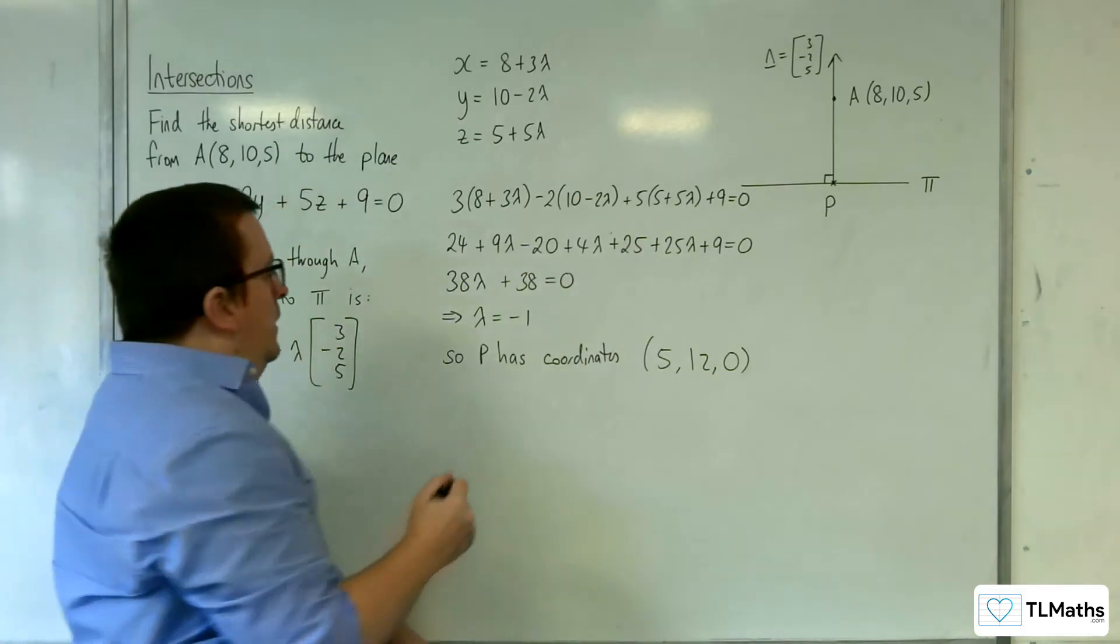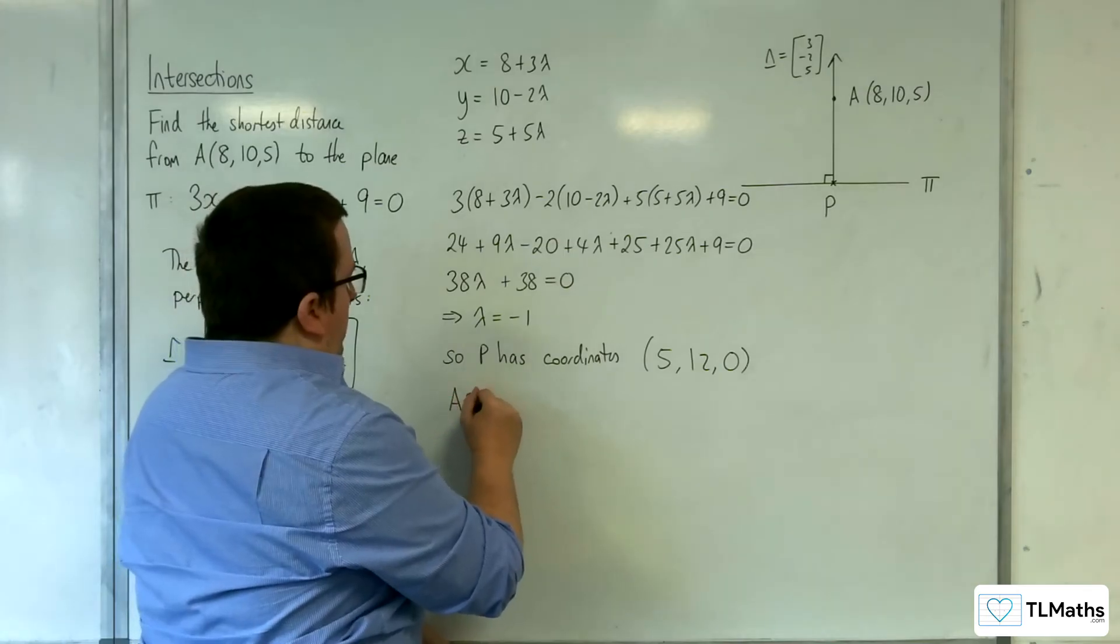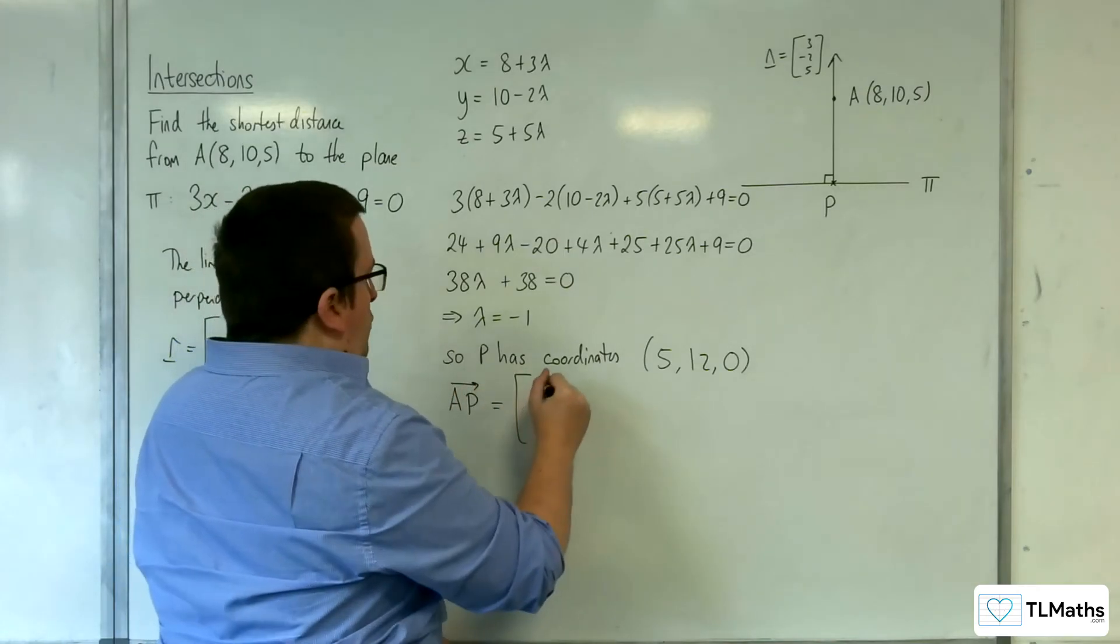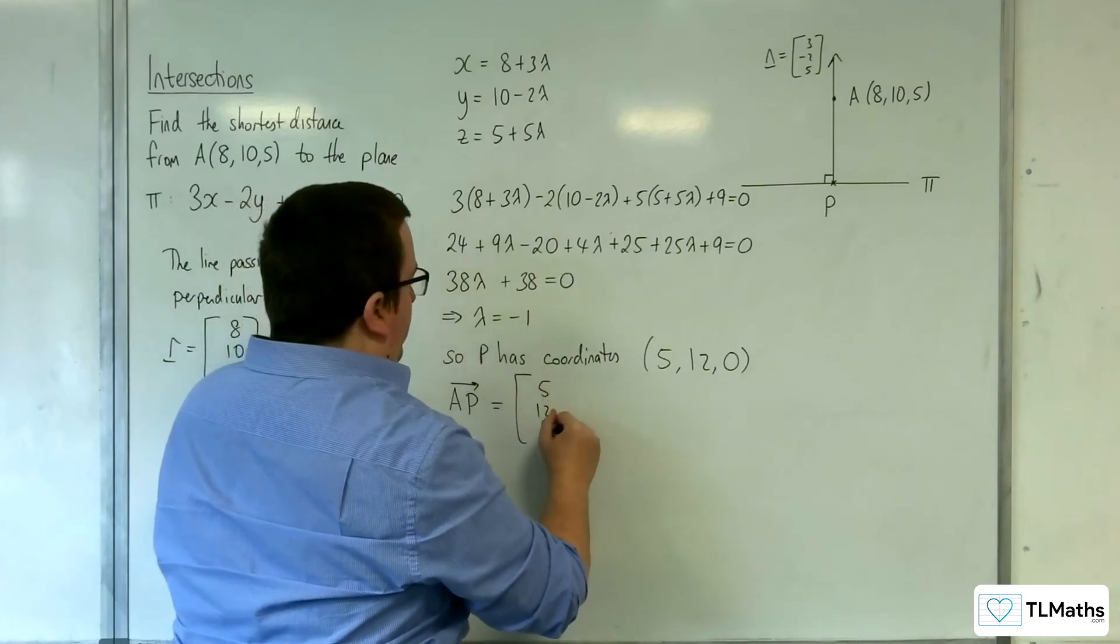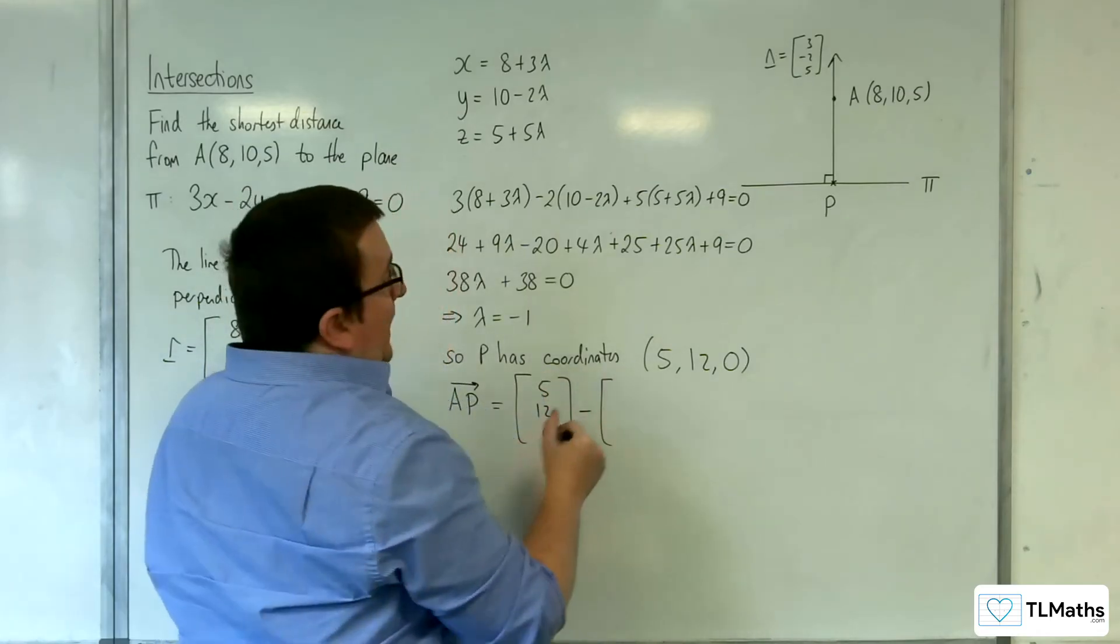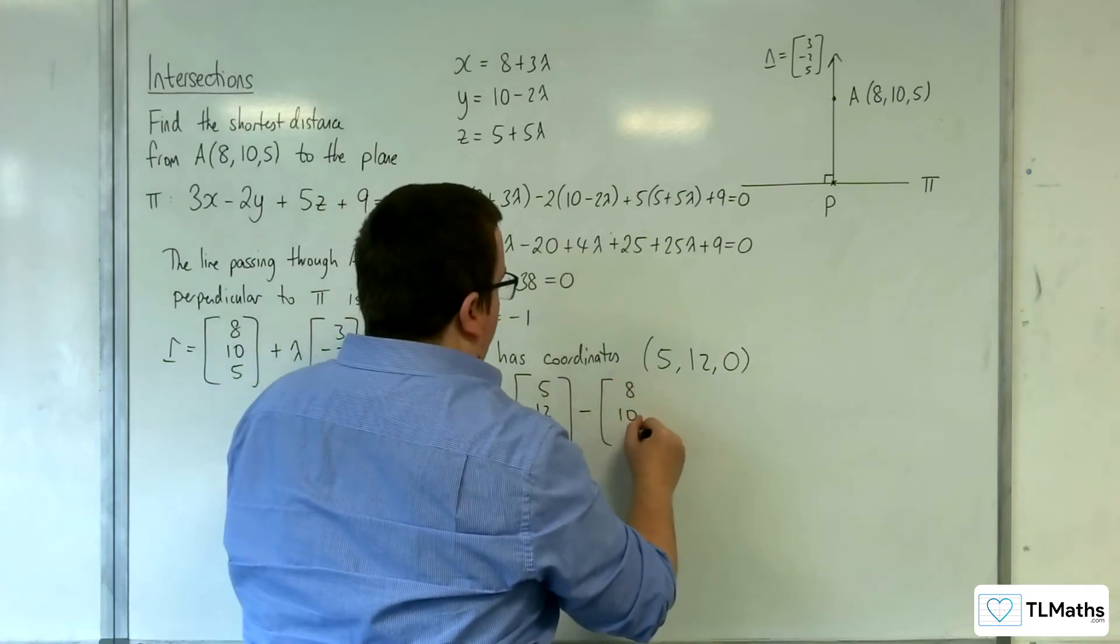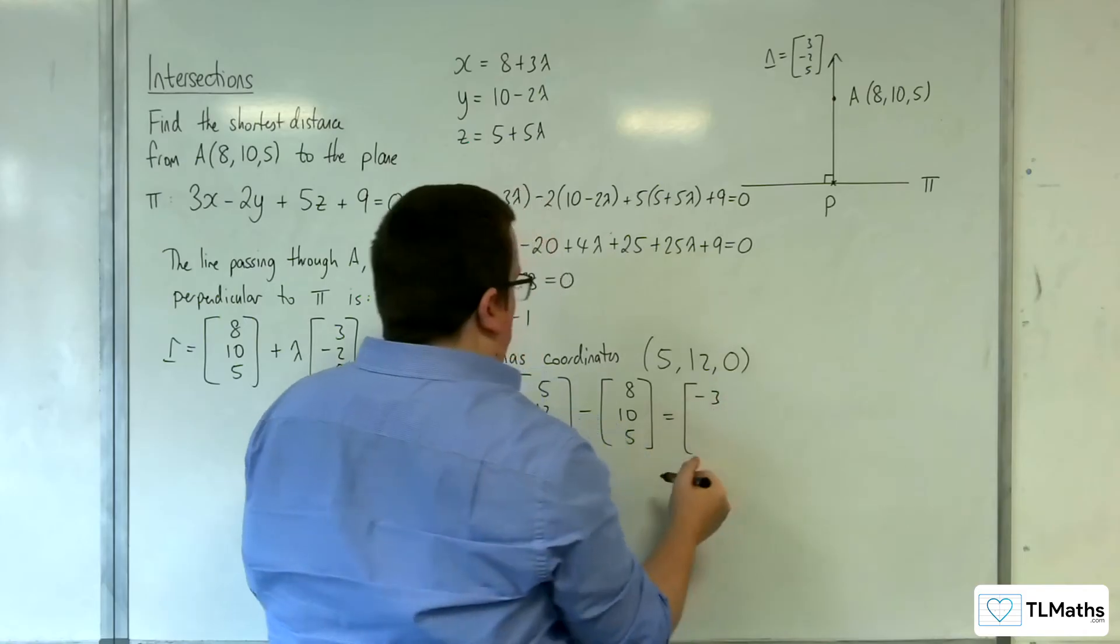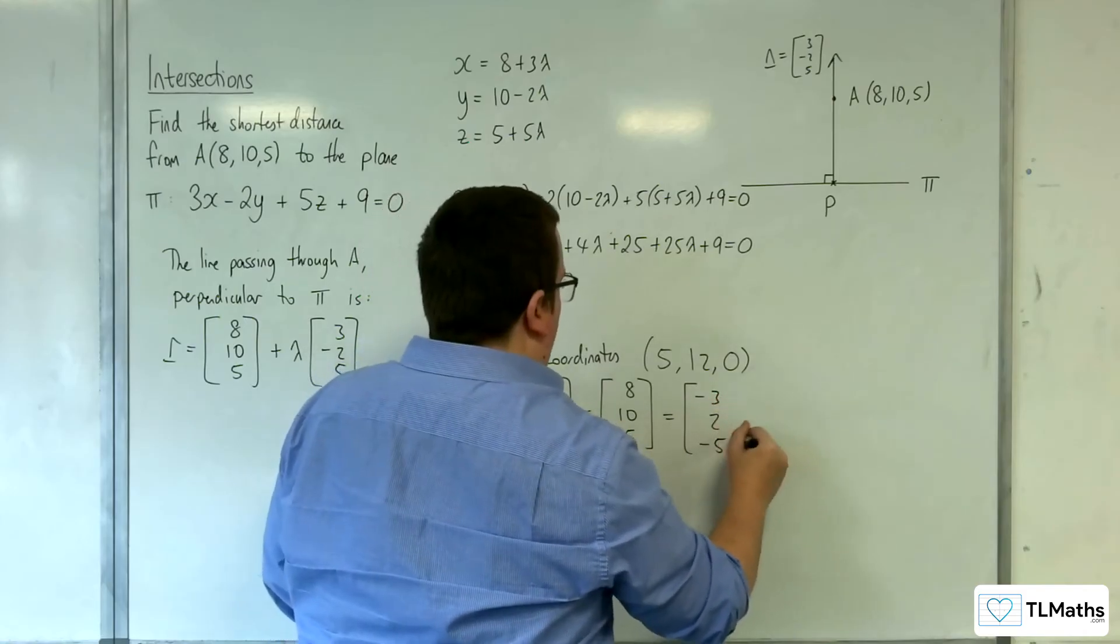So then I can work out the vector AP and then find its length. So that's OP (5, 12, 0) take away (8, 10, 5), so (-3, 2, -5).